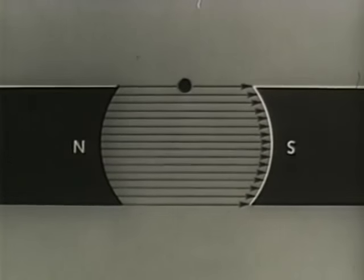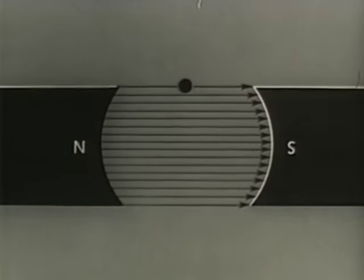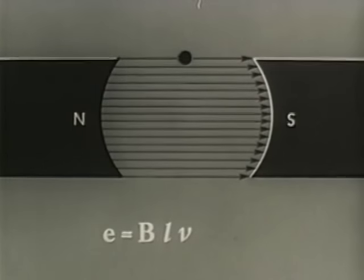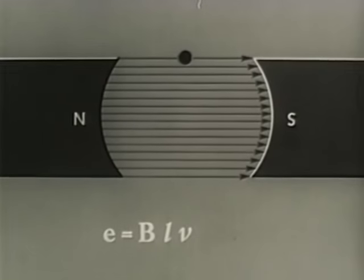Again at 180 degrees, no lines are cut, no EMF. We reach a maximum again at 270 degrees, and finally again at 360 degrees, no lines are cut. The conductor has rotated 360 mechanical degrees, which correspond in this instance to 360 electrical degrees. Therefore, when the conductor moves in a rotary path, another factor is added to the original formula: instantaneous EMF equals field strength times the length of the conductor times velocity multiplied by sine theta.